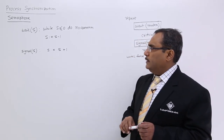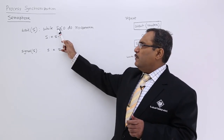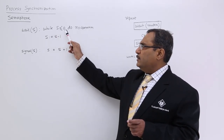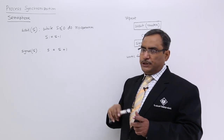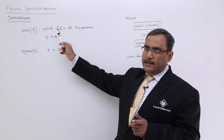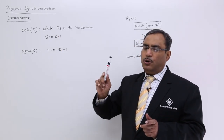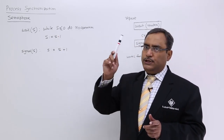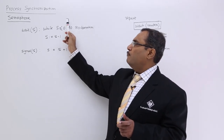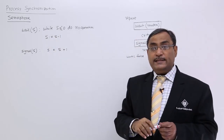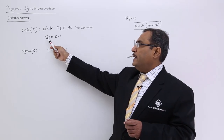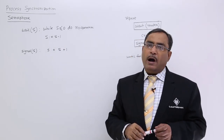Now, what is the purpose of wait? It states: while S is less than or equal to 0, do no operation. It is a while loop, not an if — meaning until S becomes greater than 0, this no-operation loop will continue, going into an infinite loop. When S becomes positive and non-zero, only then will it proceed to the next line.